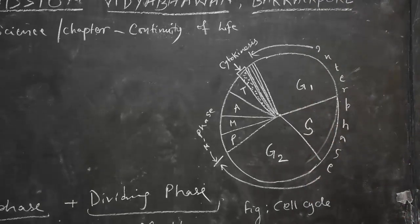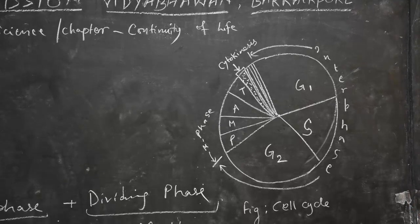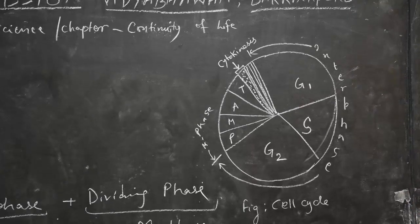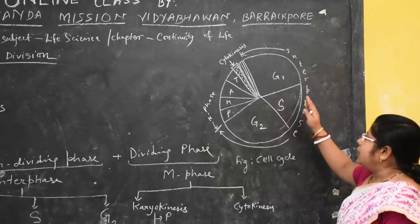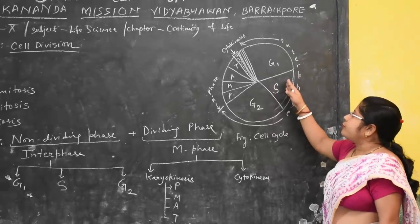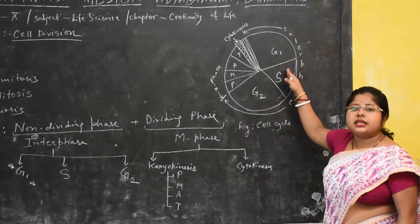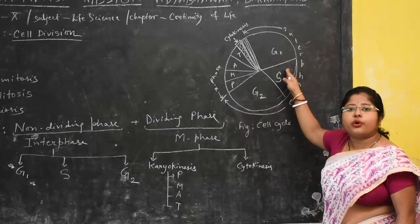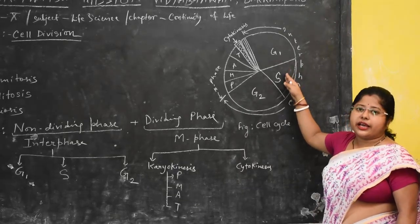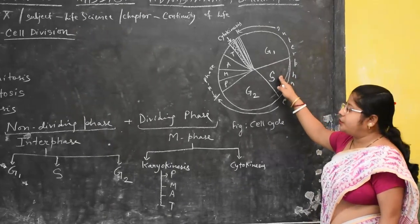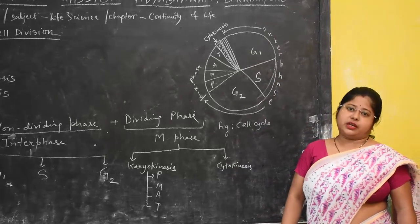In the G1 phase, the duplication of DNA does not take place. When G1 is complete, the cell enters into the S phase, which is known as the Synthetic phase.